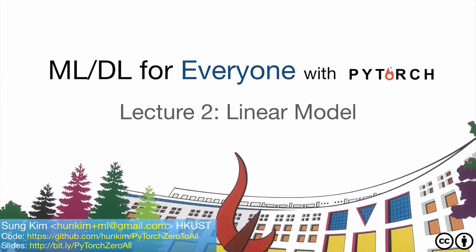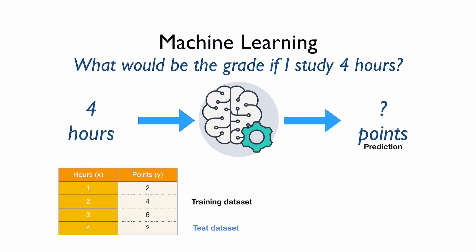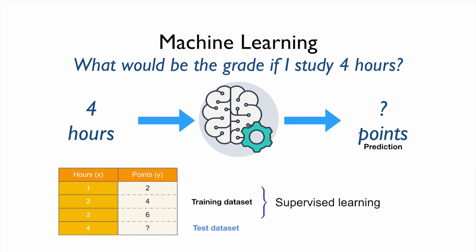In this second lecture we're going to introduce the linear model. Last time we briefly talked about machine learning and how it works: we use labeled training data sets to train a model, and then once the model is trained, we use a test data set to evaluate our model. That's the basic concept of machine learning.